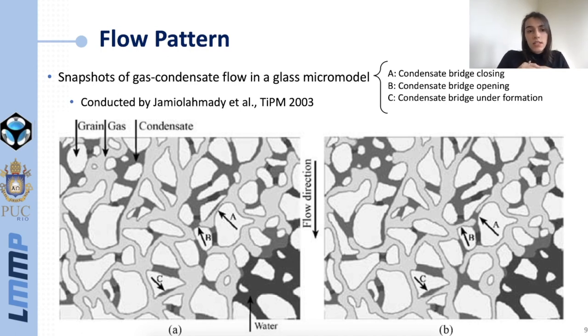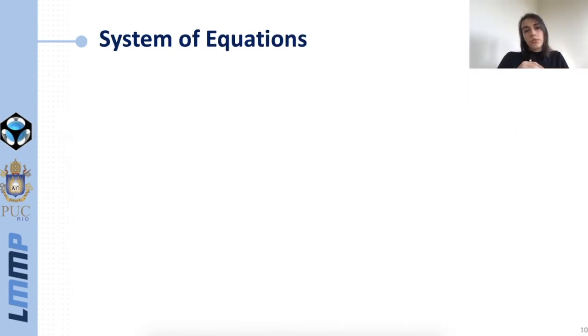Here we can see the snapshots of gas and condensate flow in glass micro models. Those experiments were conducted by a different group. If we focus on points A, B and C we can see those flow patterns I just mentioned. In those images the grains are represented in white, the gas in light gray, and the condensate in medium gray. We can see in A a condensate bridge closing, in B one opening, and in C one that is about to be formed.